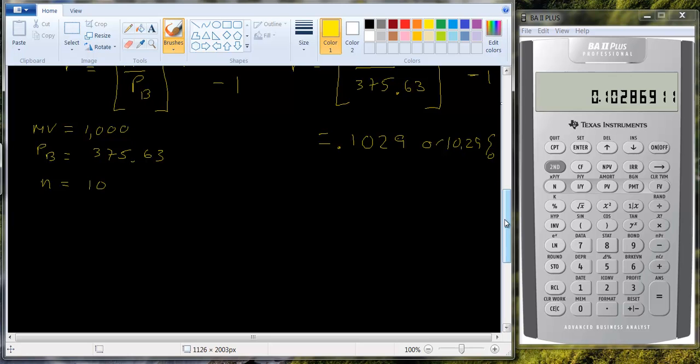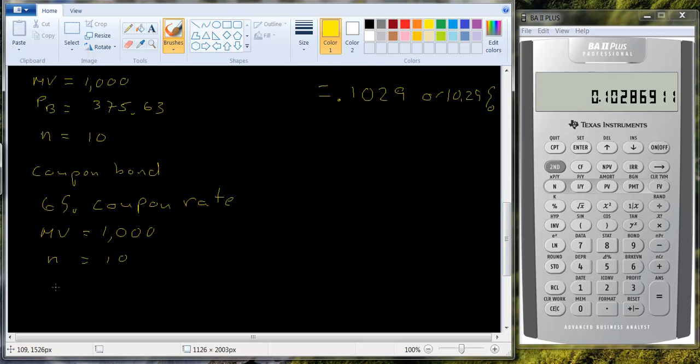Now suppose we have a coupon bond. If we have a coupon bond, it's a little more complicated. We're not going to be able to solve it out explicitly. Let's just look at an example. Suppose we have a 6% coupon rate. We have a maturity value of $1,000 and the bond matures in 10 years. So we know that we're going to get $60 a year in interest, 6% of the $1,000 maturity value. So the pricing equation is going to look like this.